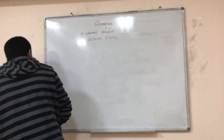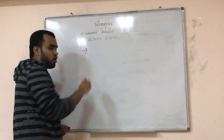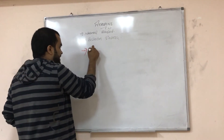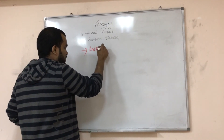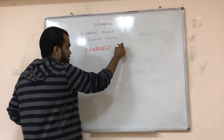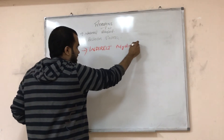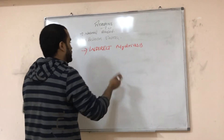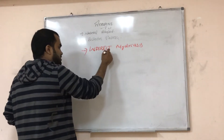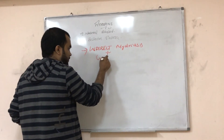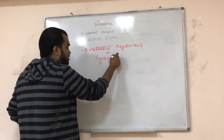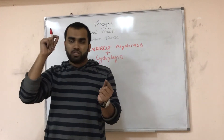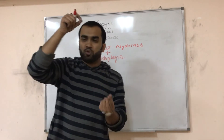Atropine blocks the M3 receptor in the eye, so it causes indirect mydriasis — opening of the eye — because it is closing the parasympathetic system, plus cycloplegia. Cycloplegia means the driving movement of the eye is blocked.